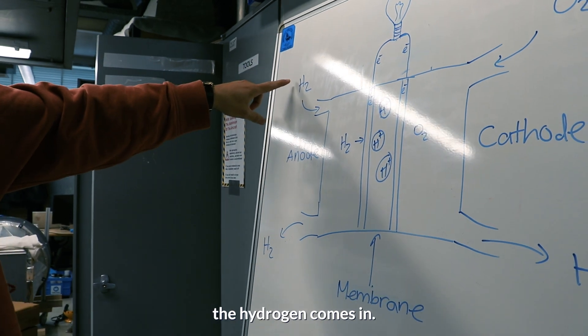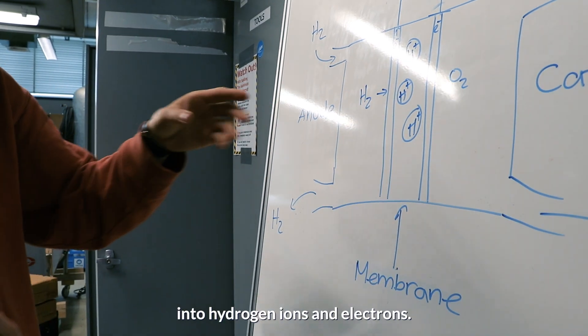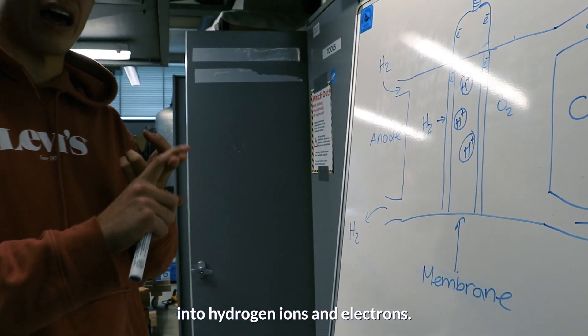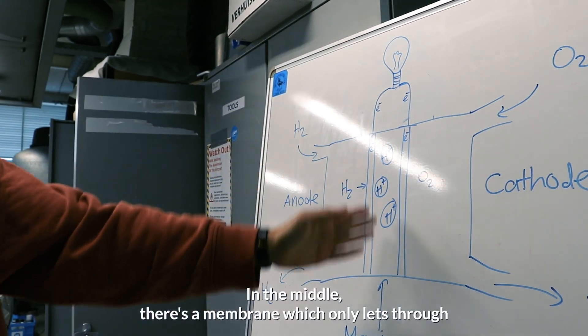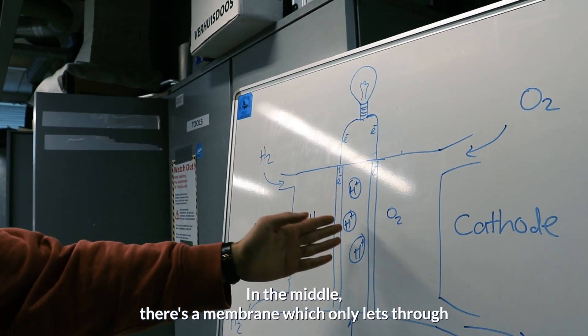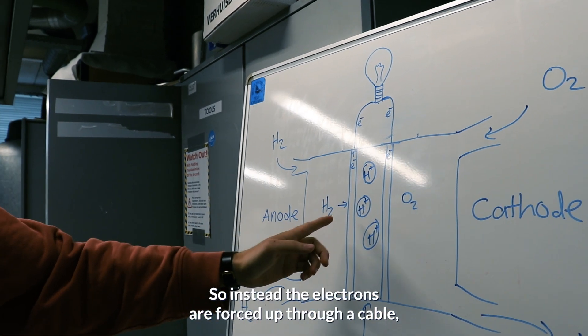On the anode, the hydrogen comes in. It then gets broken up by a catalyst into hydrogen ions and electrons. In the middle, there's a membrane which only lets through the hydrogen ions but not the electrons.